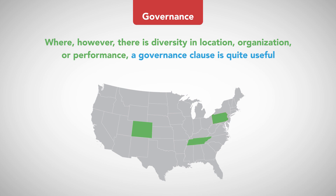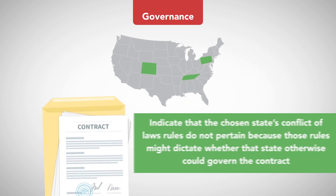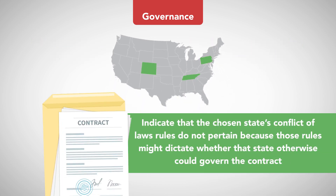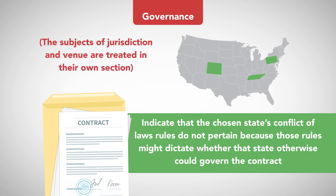Where, however, there is diversity in location, organization, or performance, a governance clause is quite useful. Almost all of them nowadays indicate that the chosen state's conflict of laws rules do not pertain, because those rules might dictate whether that state otherwise could govern the contract. The subjects of jurisdiction and venue are treated in their own section.